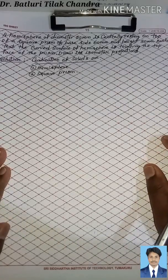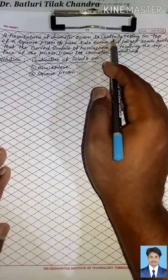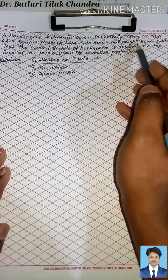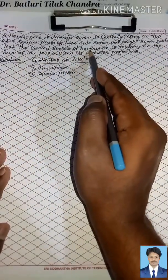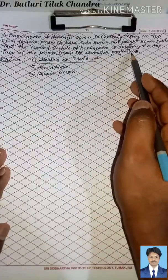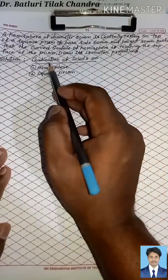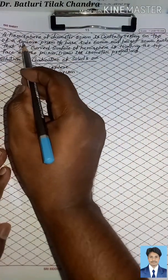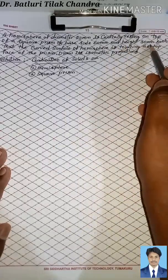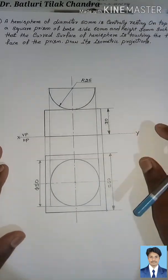Hello friends, today we are discussing a problem in isometric projection. The problem is: a hemisphere of diameter 50 mm is centrally resting on top of a square prism of base side 60 mm and height 30 mm, such that the curved surface of the hemisphere is touching the top face of the prism. Draw its isometric projection.